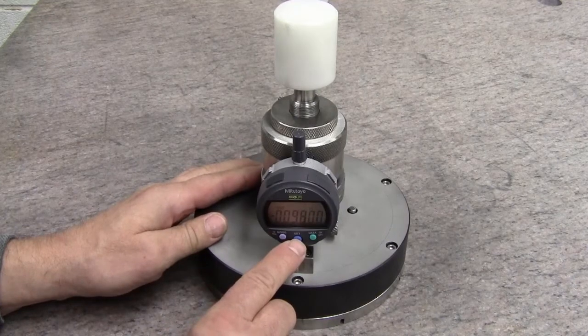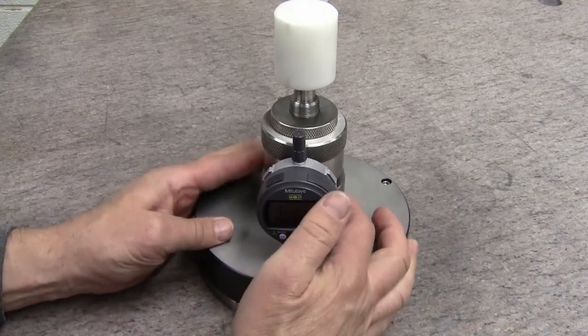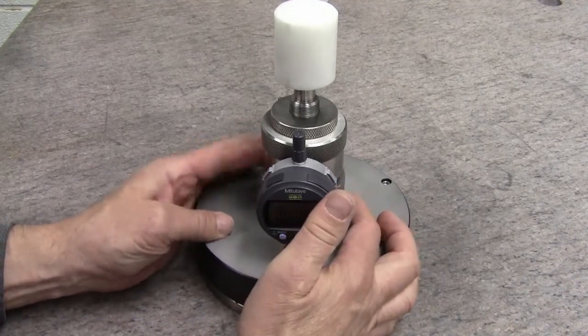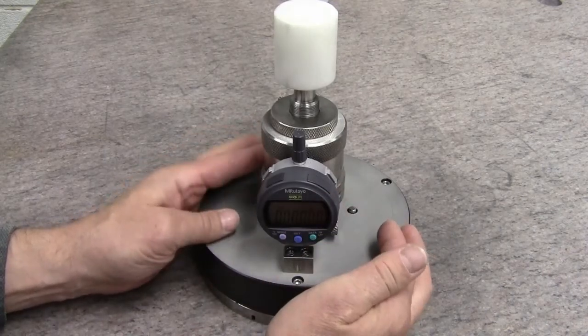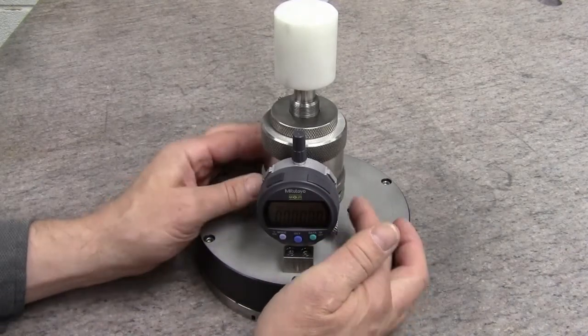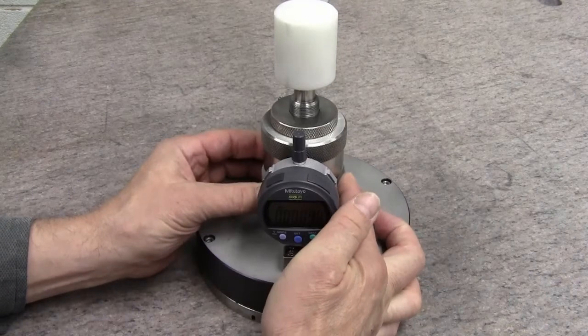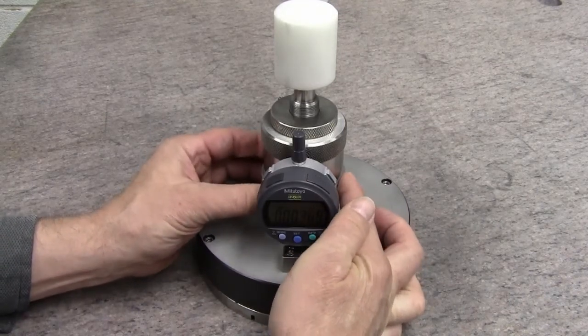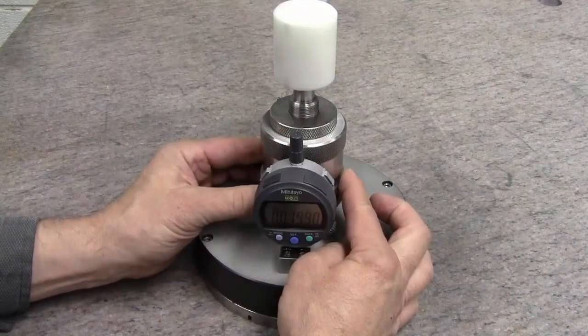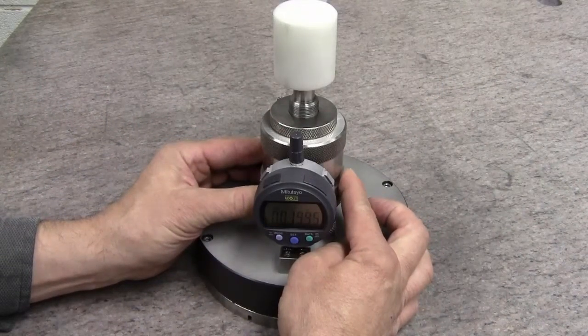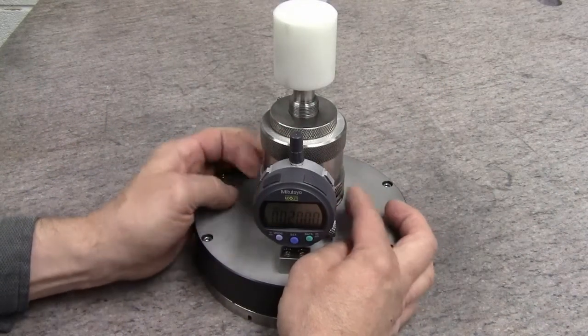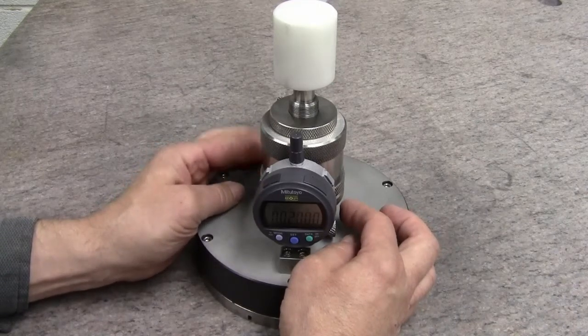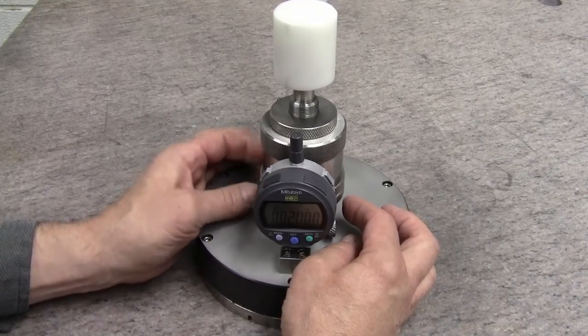We then reset our zero and from there we can make an adjustment as to what we want our targeted thickness for our wafer to be. In this case we will set it to 20 thousandths. And once we get to our targeted size we use the secondary ring to lock the lock ring in place.